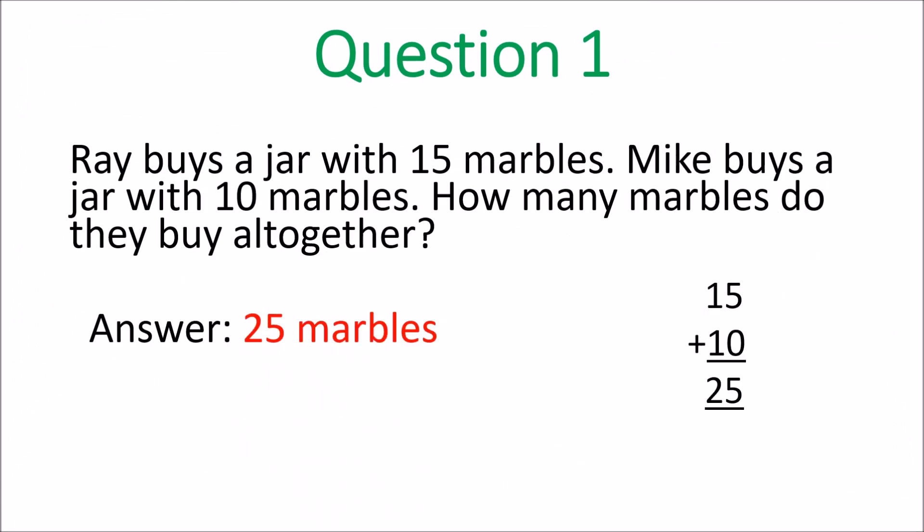And question 1. Ray buys a jar with 15 marbles. Mike buys a jar with 10 marbles. How many marbles did they buy altogether? You have to add 15 and 10. You get 25. Answer: 25 marbles. Mark it. Hope you got it correct. You did not have to regroup.